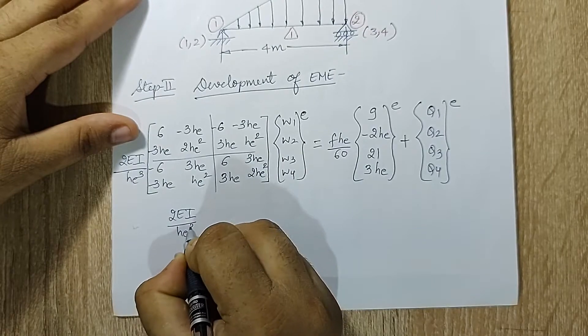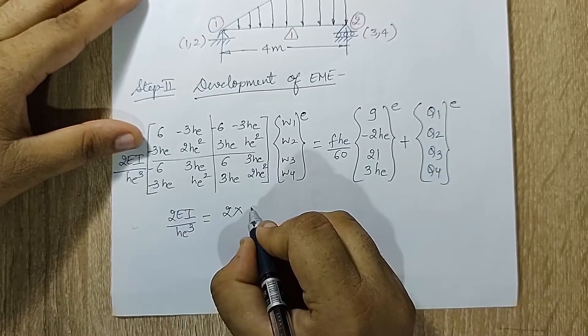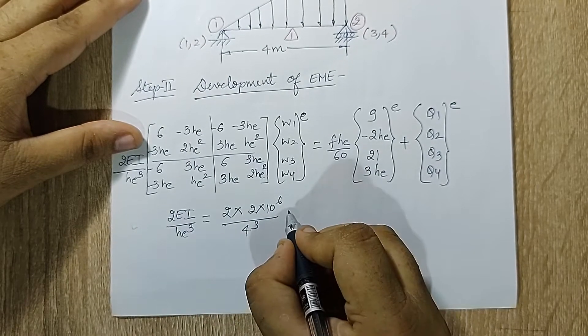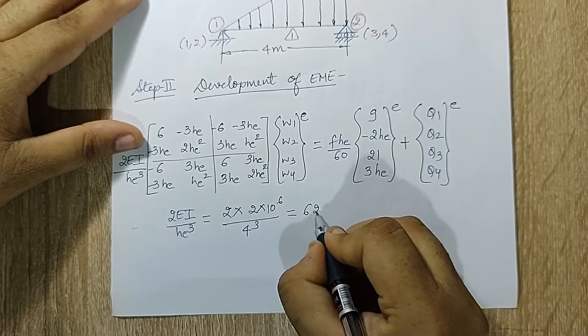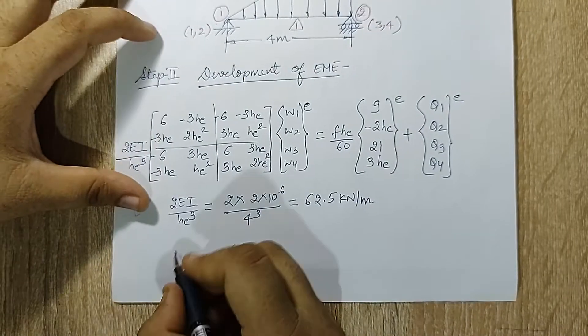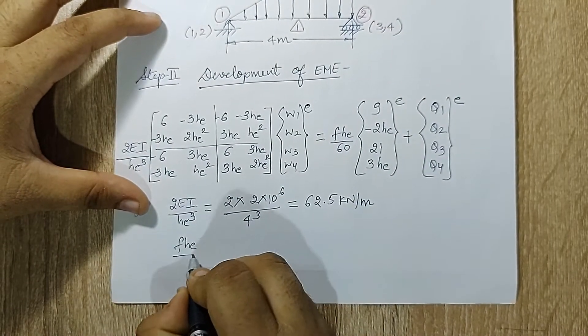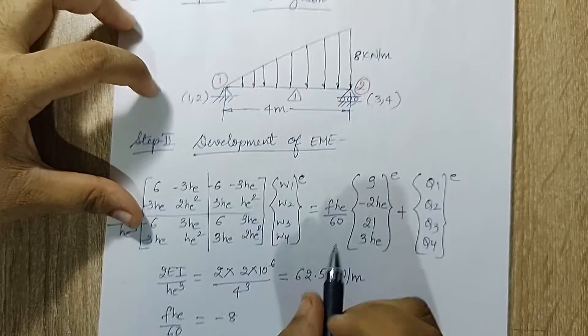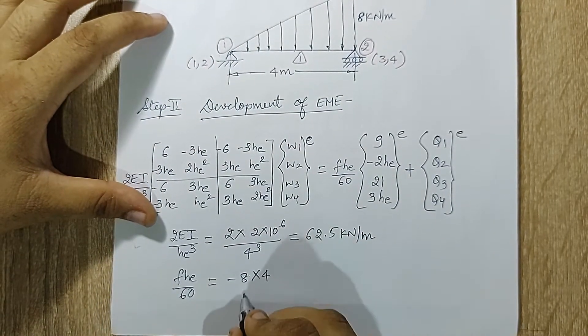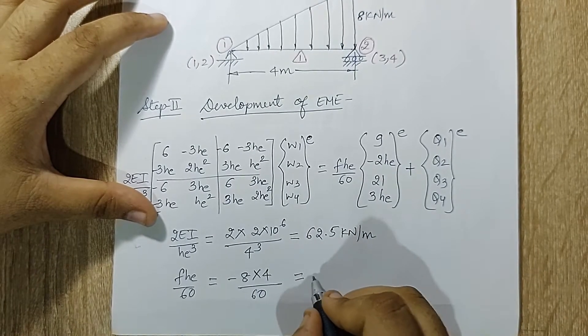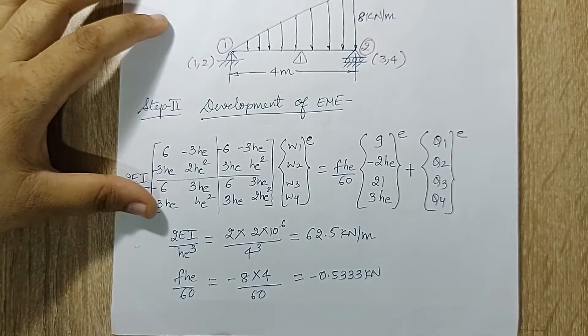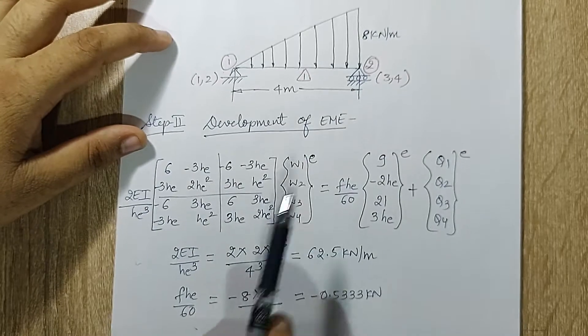First I'll be calculating 2EI upon HE cube. This is 2, the value of EI is given as 2 into 10 raise to 6, and HE is 4. When I solve this, I'll get 62.5 kilo Newton per meter as the answer. If I calculate FHE upon 60, I'll get minus 8, because this is the value of UVL, minus 8 into I have value of HE as 4 and this is 60. When I solve this I get minus 0.5333 kilo Newton. Now I'll be substituting these values over here.